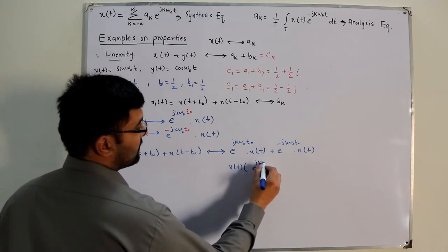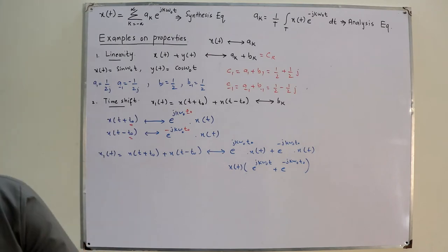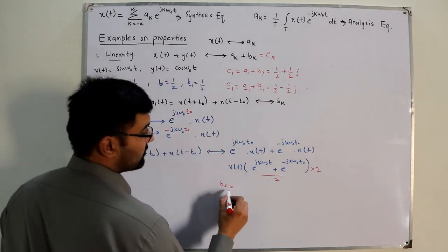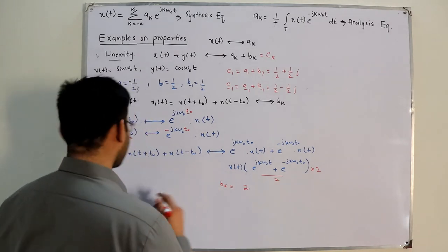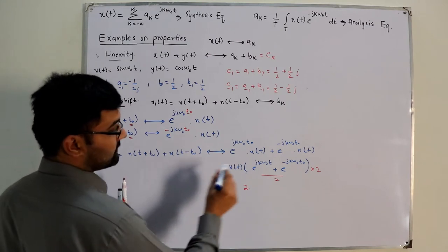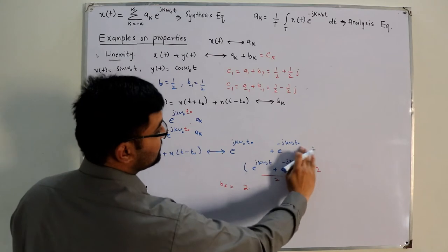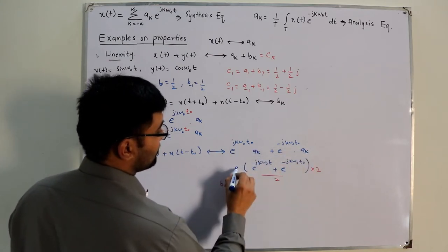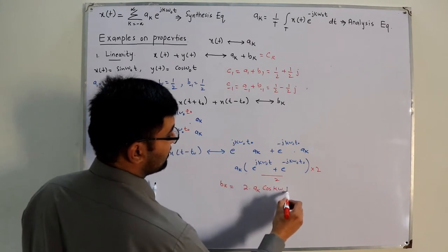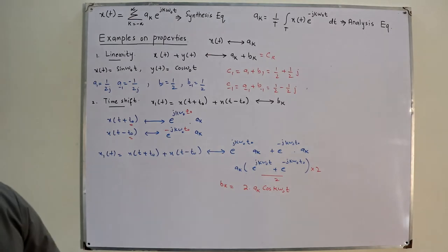You have e^(jkω₀t₀) + e^(-jkω₀t₀). If you multiply and divide by 2, you get a cosine function. So bk = 2·ak·cos(kω₀t₀). These are the new Fourier coefficients found directly using the time shift and linearity properties.